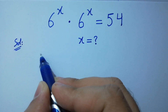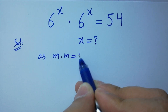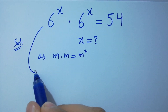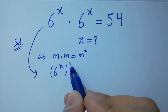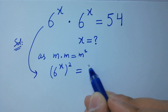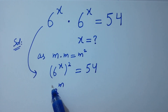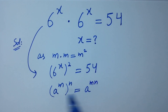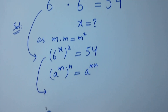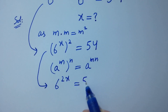As we know, m times m equals m squared. Then it will be 6 to the power x, to the whole power 2, equal to 54. Using the rule a to the power m to the whole power n equals a to the power mn, we get 6 to the power 2x equal to 54.